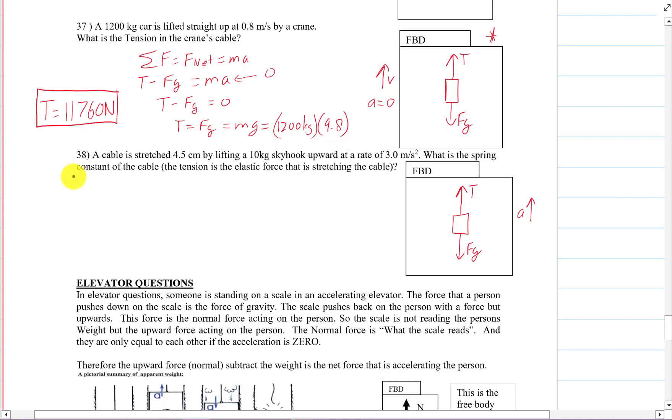So we'll start way over here. The sum of the forces is equal to F net, which equals Ma. And that tension minus the force of gravity is equal to Ma. And the force of gravity here is mg. And it is a 10 kilogram times 9.8. So this is 98 newtons.